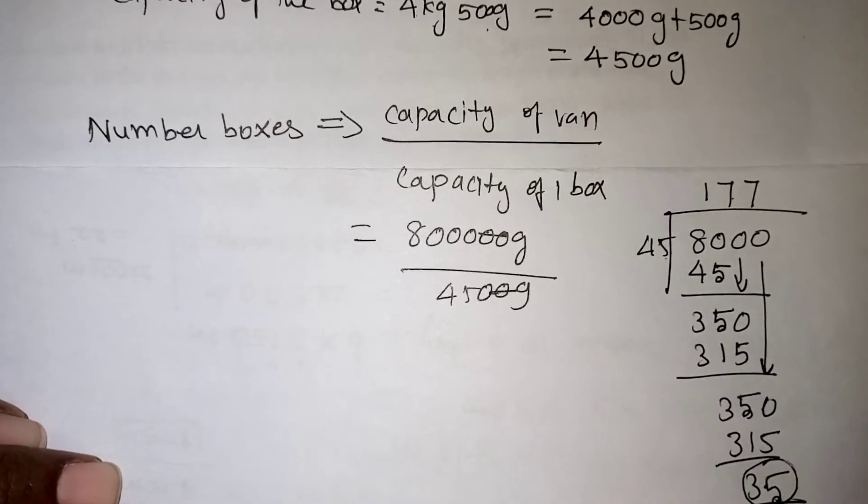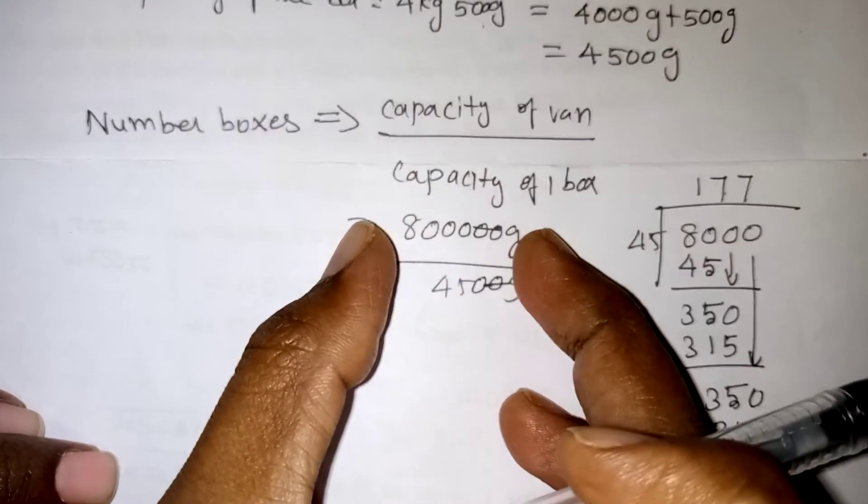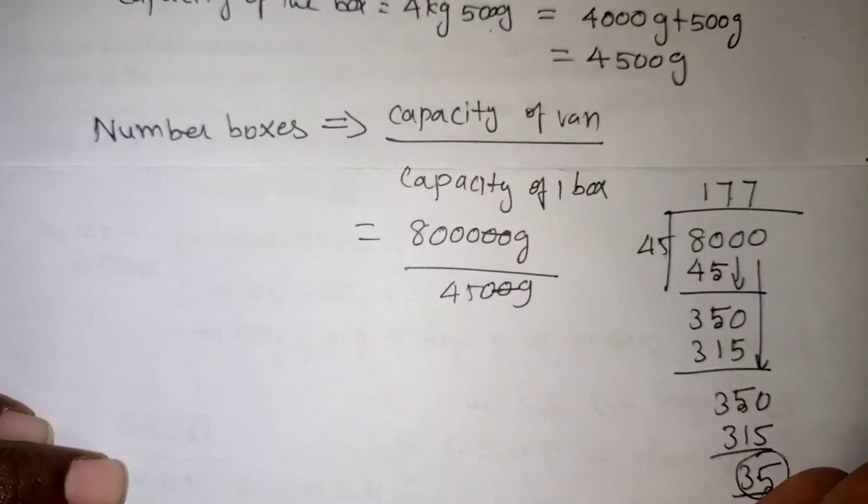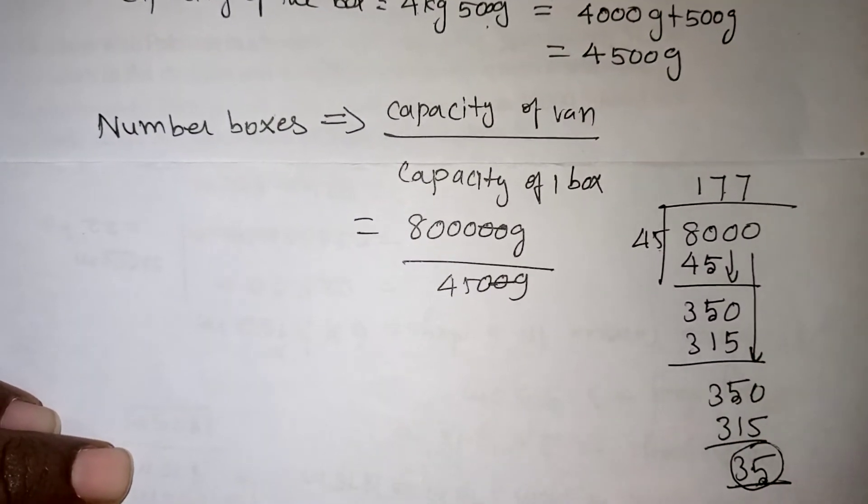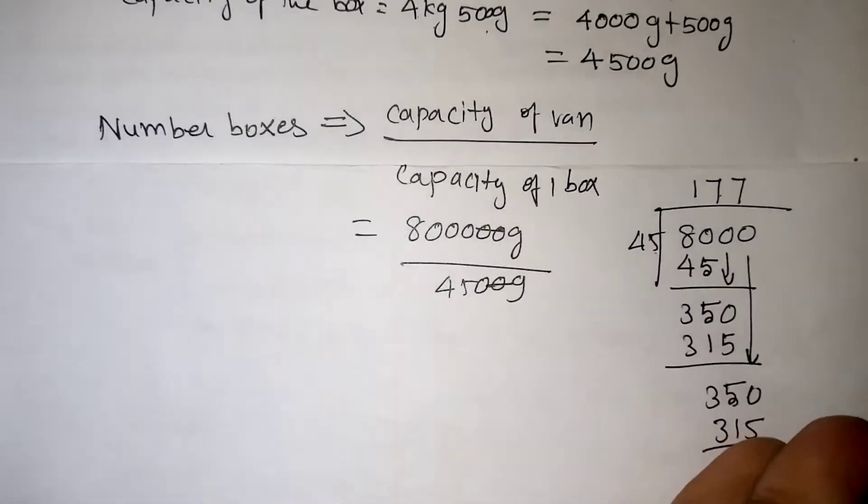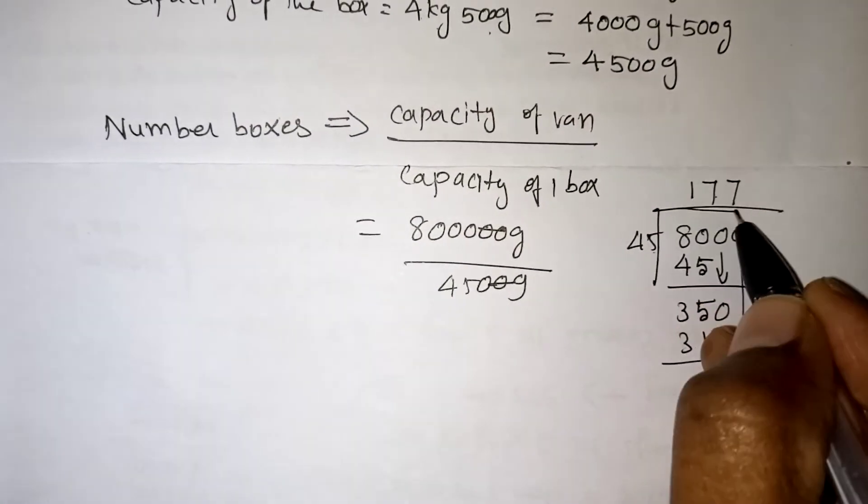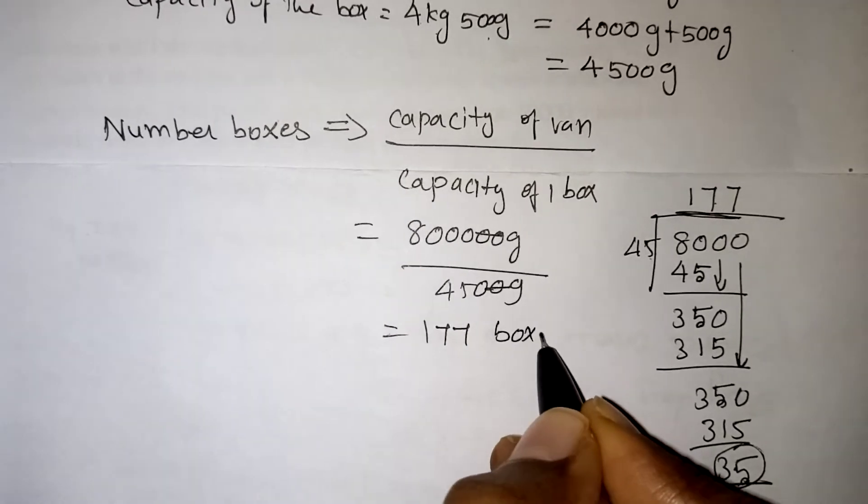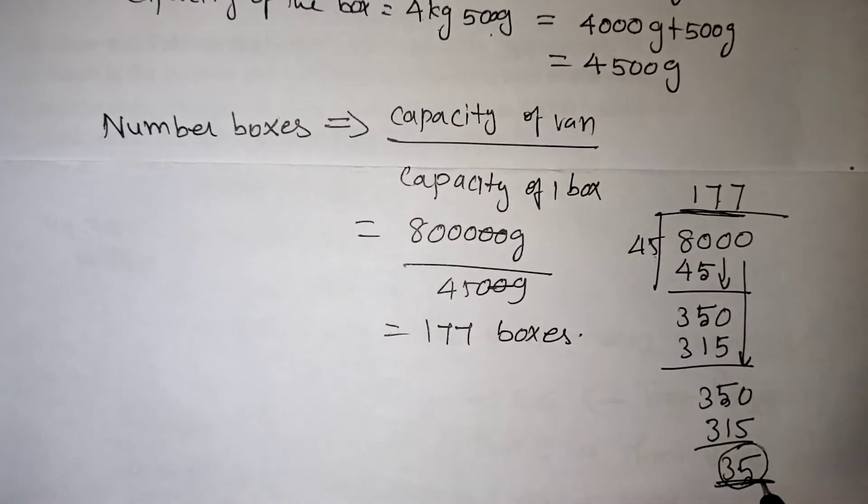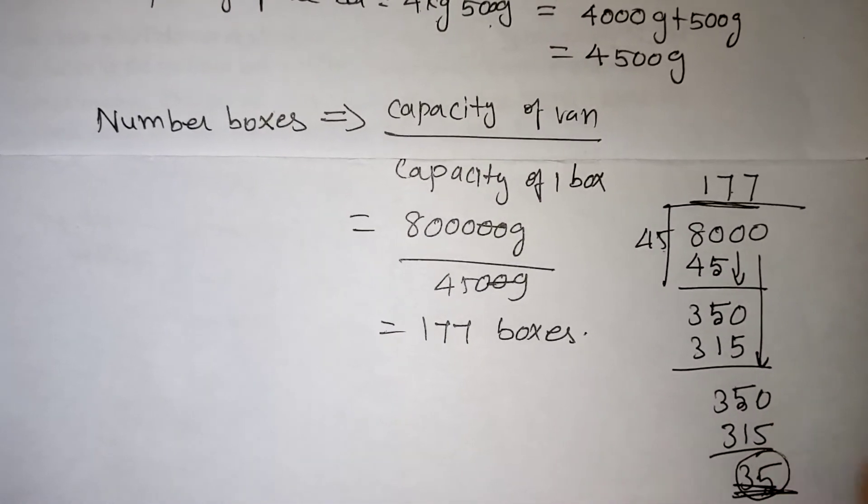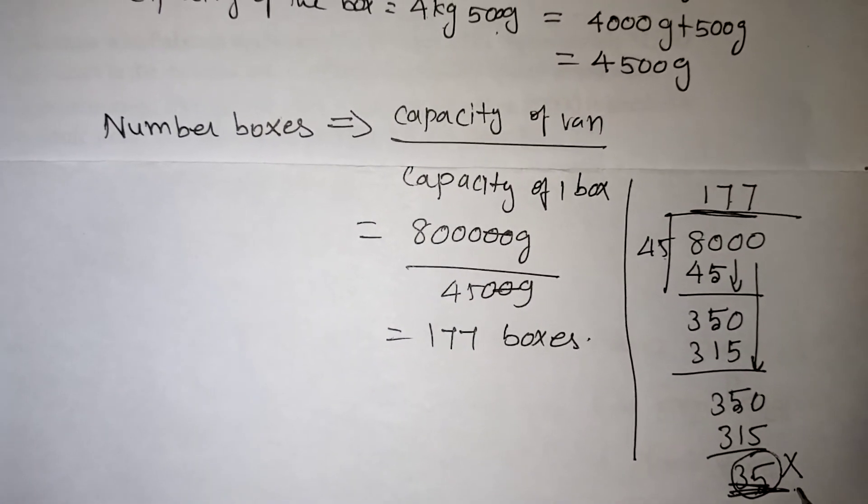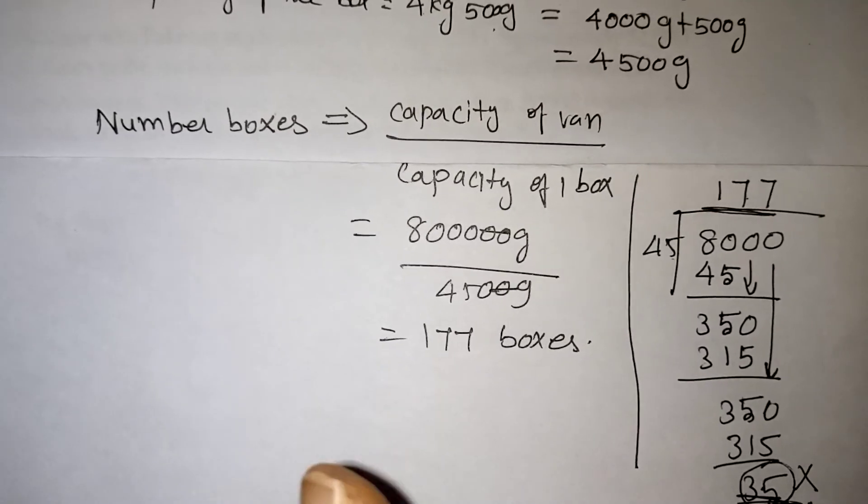Completely 177 boxes can be filled in the van. Some extra medicine will be available outside. That van capacity is this much only; beyond this we cannot take it into the van. So the remaining boxes you can leave in the factory. Totally, how many boxes can be taken in the van? Definitely we can take 177 boxes in that van completely.